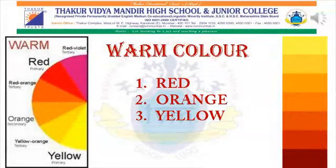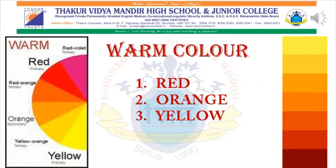Warm colors: Red, yellow, and orange are warm colors. Their mixed variations also create warm color harmony. These colors are related to fire, warmth, sunlight, danger, etc.